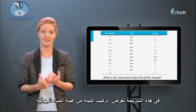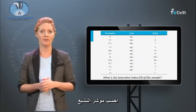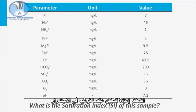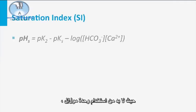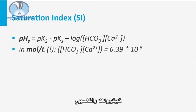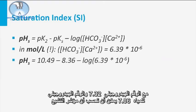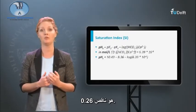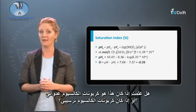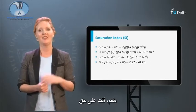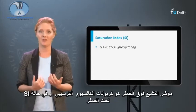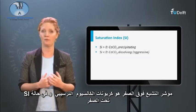On this slide, the water composition of a groundwater sample is depicted, and the question is: calculate the saturation index. I hope you started with the calculation of the pHs, where it is crucial to use the unit mole per liter for bicarbonate and for calcium. With a pHs of 7.32 and a water pH of 7.06, it can be calculated that the saturation index is minus 0.26. This water is calcium carbonate aggressive, because the SI is below 0. A saturation index above 0 is calcium carbonate precipitating, and an SI below 0 will dissolve calcium carbonate.